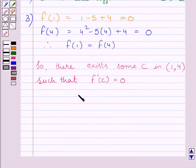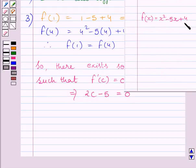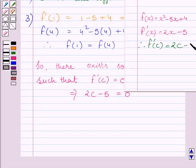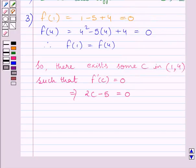Now, f'(c) = 0 implies 2c - 5 = 0. We know f(x) = x² - 5x + 4. Now, differentiating both sides with respect to x, we get 2x - 5 = f'(x). So we can find f'(c) by replacing x by c in this expression and we get f'(c) = 2c - 5. Now, this further implies 2c = 5. Adding 5 on both sides of this equation, we get 2c = 5. Now, dividing both sides of this equation by 2, we get c = 5/2.